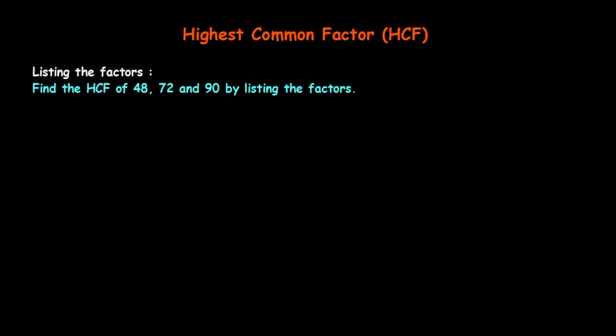The first method is listing the factors. We will find the HCF of 48, 72, and 90. There are different methods: the listing method, the prime factorization method, and the division method. We are going to discuss all three methods in this video.